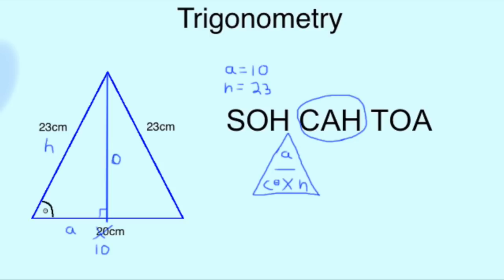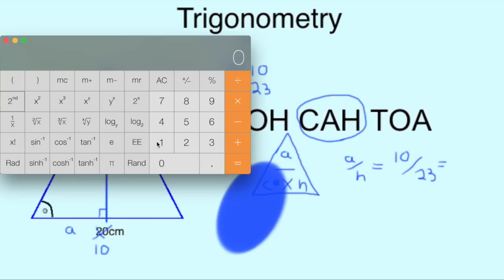Since we have our A and our H, and it is the C, which has the theta, so angle we are looking for. We cover up the angle, so the C, and that leaves us with the equation A over H. Which, in our terms, is 10 for our adjacent, over 23, which is our hypotenuse, which gives us an answer of roughly 0.43.